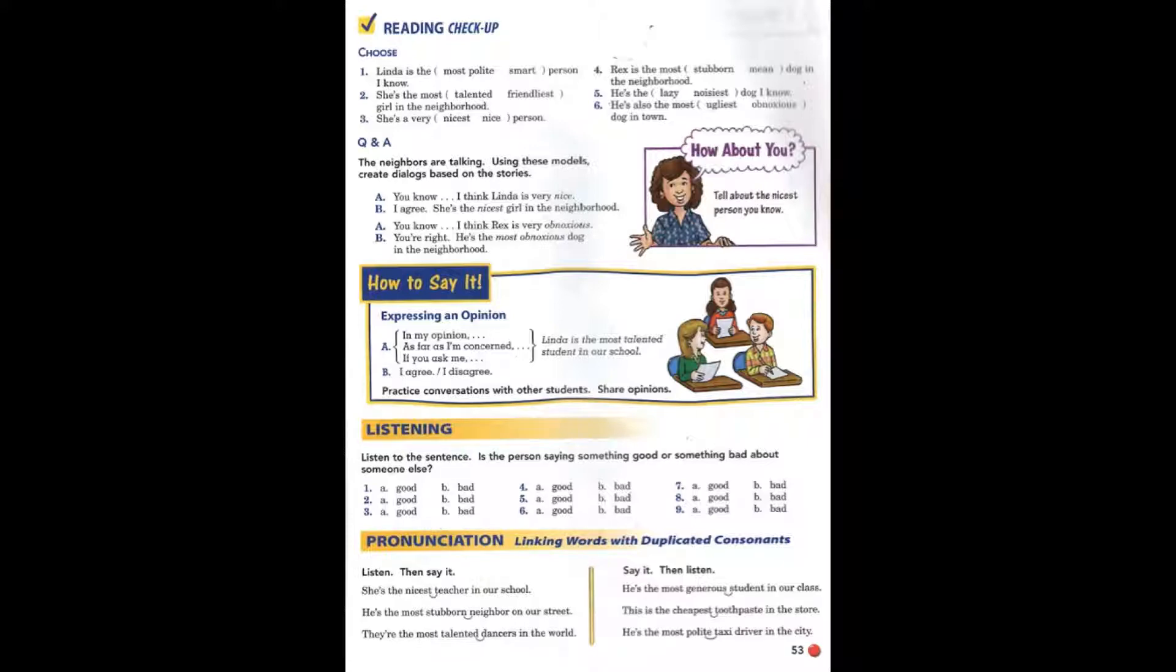Six. He's the rudest person in our apartment building. Seven. He's the most dependable person in our office. Eight. She's the kindest neighbor on our street.